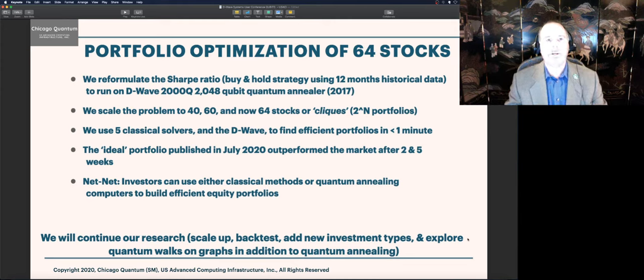So what did we set out to accomplish? We wanted to run portfolios of a reasonable size on a quantum annealer. We reformulated the Sharpe ratio because it just wouldn't work on the quantum annealer. We couldn't figure out how to do the division through linear algebra, which requires a linear model. So we scaled the problem. We came up with a new formulation, scaled the problem to 40 assets, then 60 assets, then 64 assets. 64 stocks is the same as a clique or fully connected vertices on the graph, which means looking at 2 to the 64 options of portfolios.